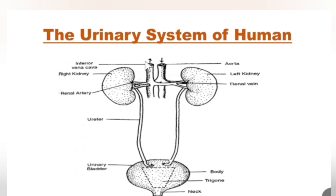Now, coming to the tubes that come from the kidney — we have a pair of ureters, a right ureter and a left ureter. They carry urine from the kidneys and drain it into the urinary bladder.